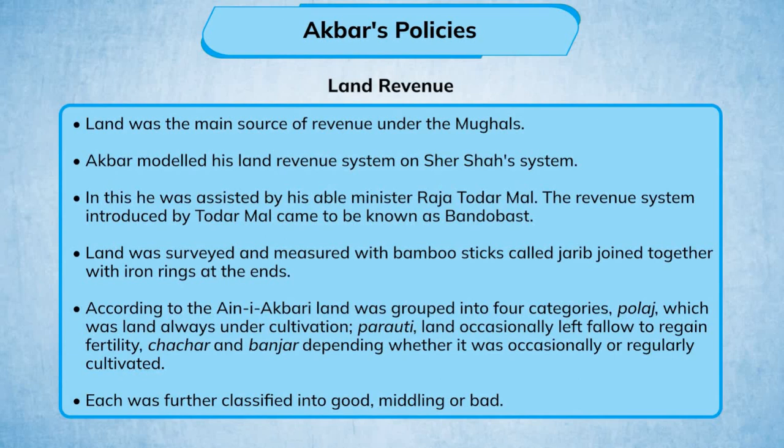Land revenue: Land was the main source of revenue under the Mughals. Akbar modeled his land revenue system on Sher Shah's system. In this he was assisted by his able minister Raja Todar Mal. The revenue system introduced by Todar Mal came to be known as Bandobast.